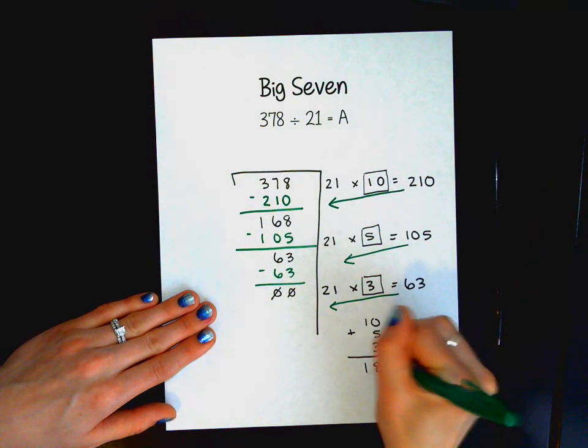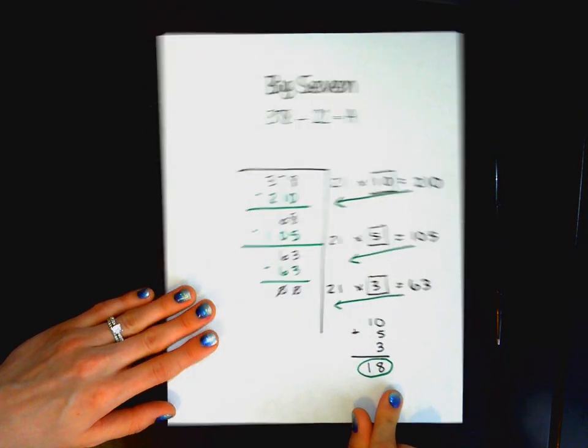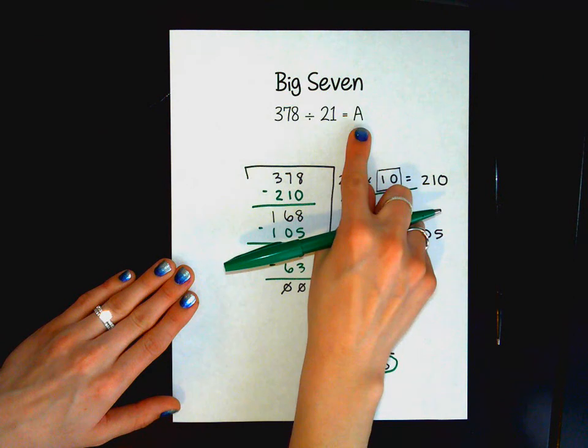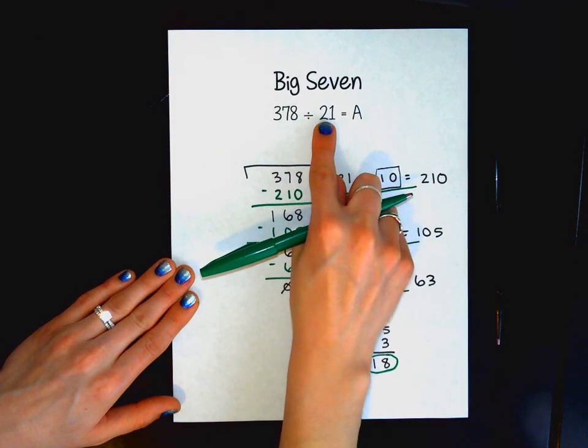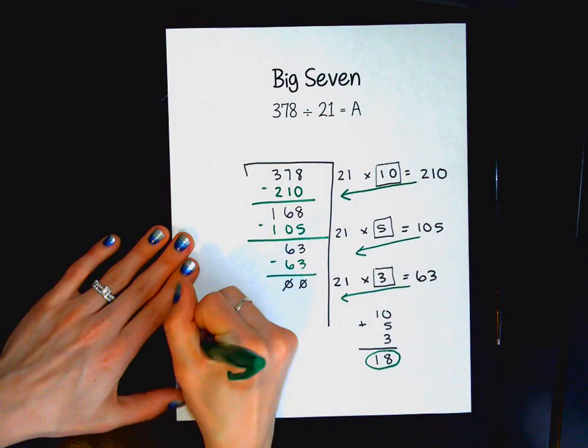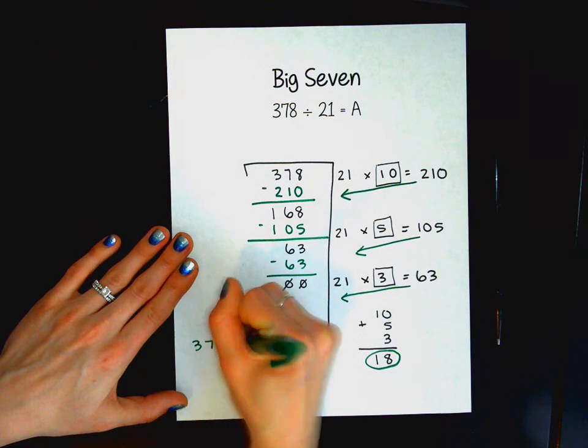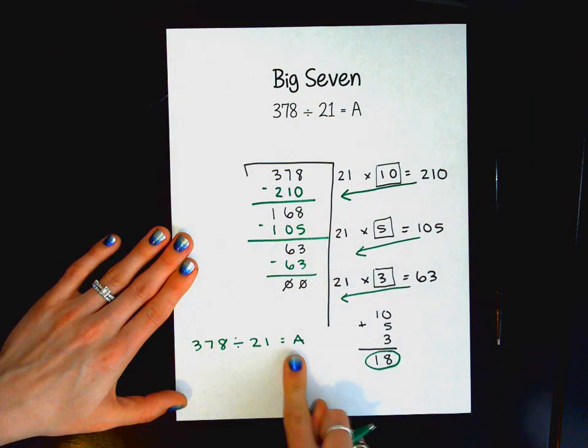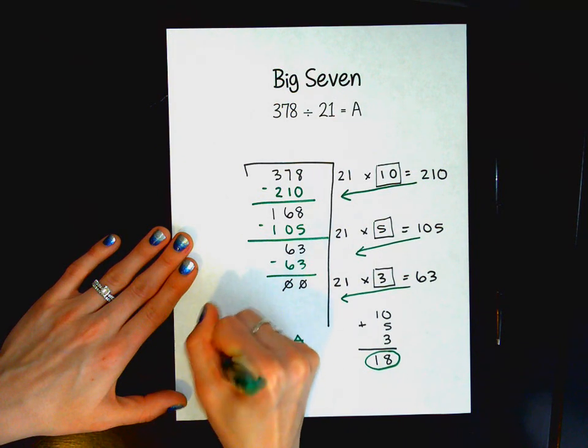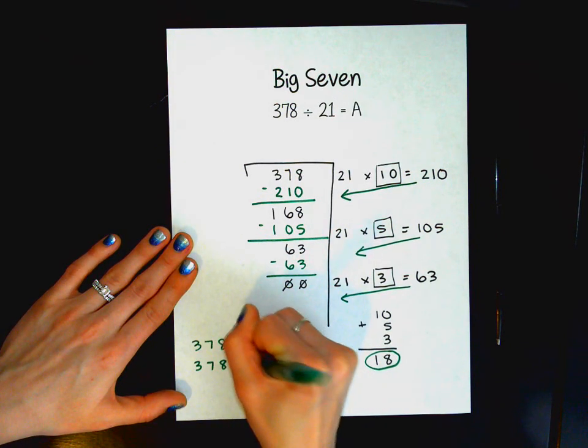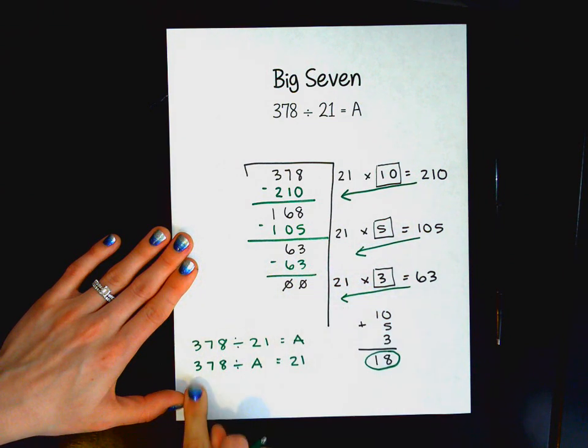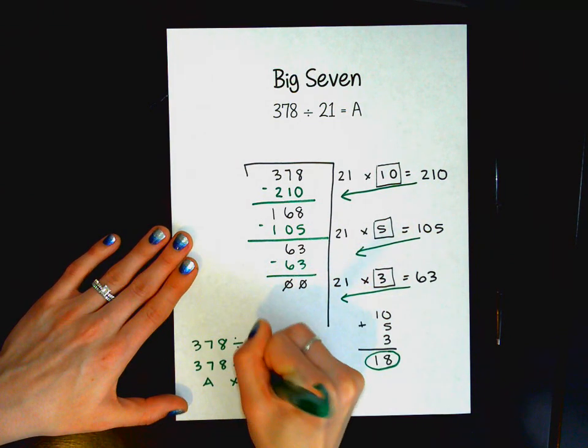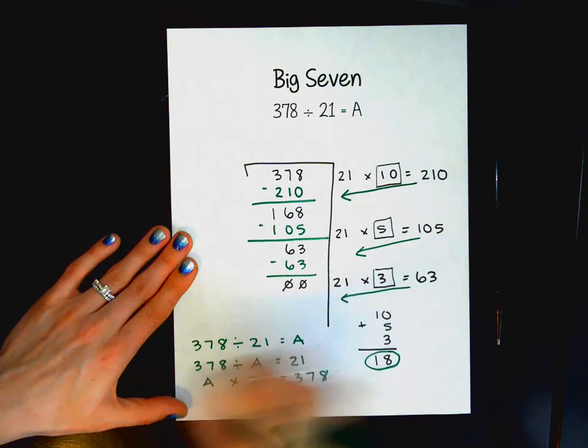Using Big Seven as a division strategy is building off of what kids already learned in earlier grades of their fact families. So if I take these two numbers and this letter, I can make four equations. So I've already been given 1. 378 divided by 21 equals A, which also means that 378 divided by A would equal 21.